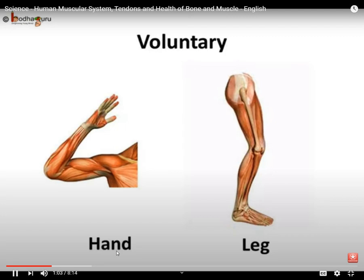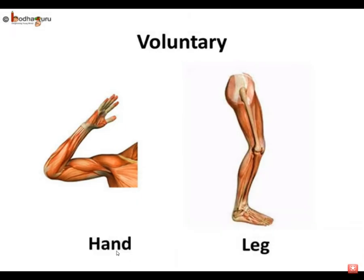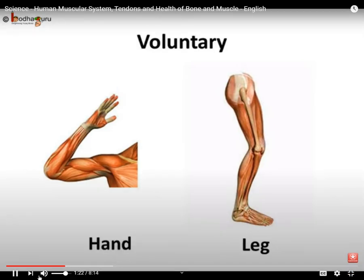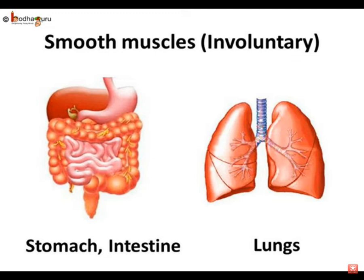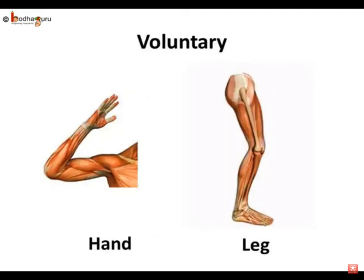Like bones, there are different types of muscles too. The type of muscle depends on whether the muscles are attached to the bones or not. Muscles which are attached to bones are called skeletal muscles — they are in our control, so also known as voluntary muscles. Involuntary muscles are the muscles which are not in our control, like cardiac muscles and smooth muscles.